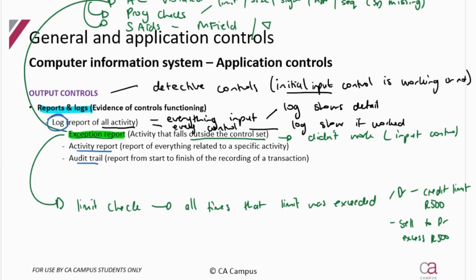An activity report and an audit trail are just types of logs. An activity report is specific to one activity — so if you're looking at one specific debtor, you can get all the activities linked to that specific debtor. An audit trail shows the entire movement of one item from start to finish of recording a transaction. Because they are both quite similar in function, when I discuss output controls I generally group activity reports and audit trails together under 'logs.'